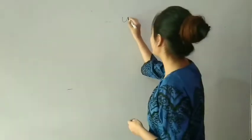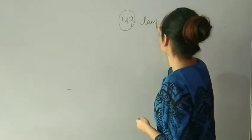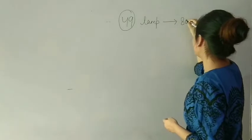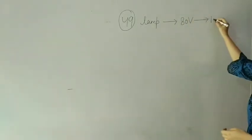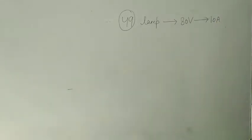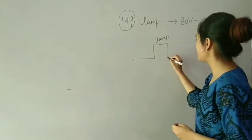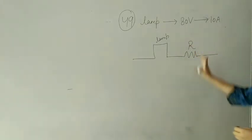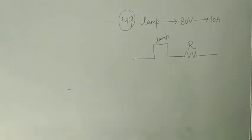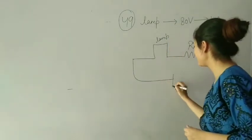Next question: a lamp is operated at 80 volt and takes 10 ampere current. How much resistance should be connected in series with the lamp? Let's suppose R ohm resistance is connected in series.